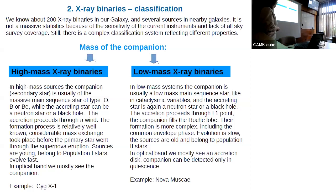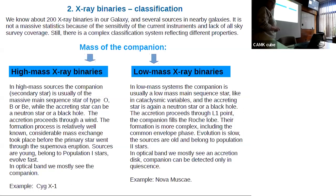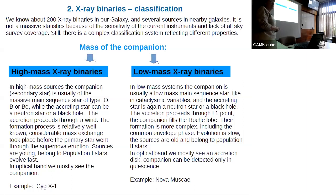In this lecture we concentrate on x-ray binaries. We know about 200 x-ray binaries in our galaxy, and several in nearby galaxies — those sources are too faint to be discovered at large distances. There is a very complicated classification; I will talk only about the basic classification.